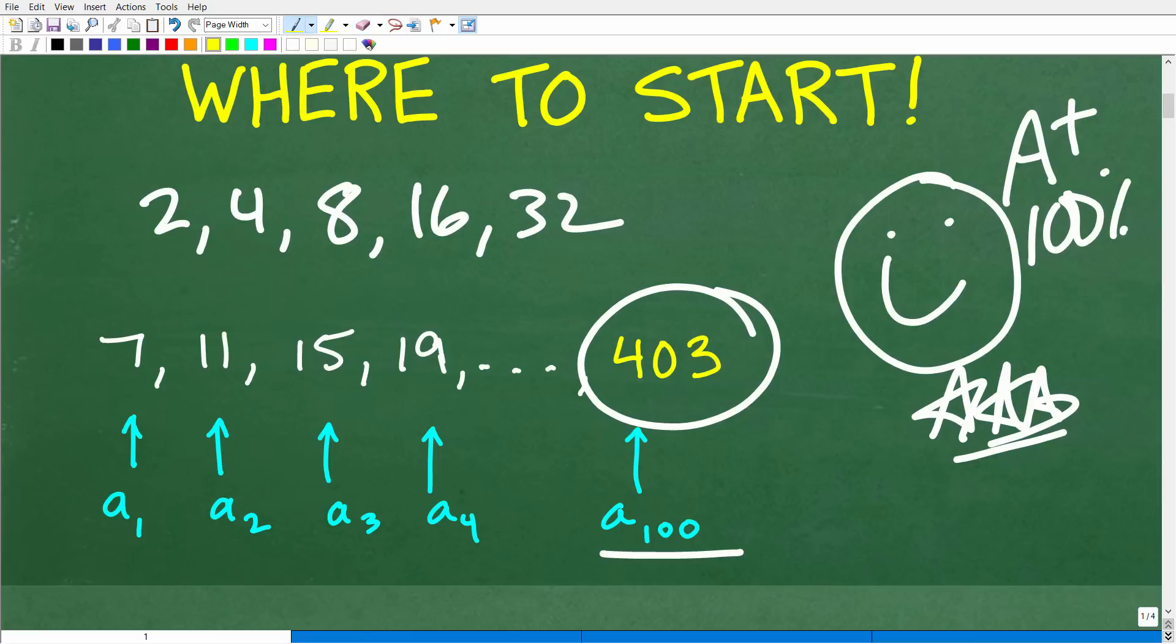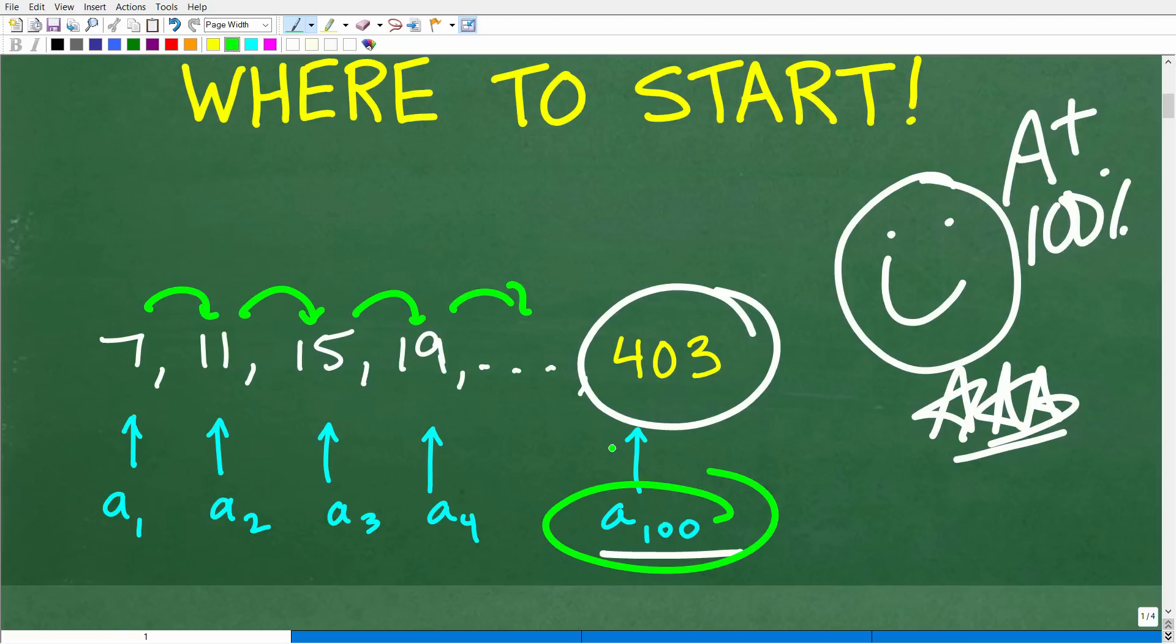This type of sequence is called a geometric sequence. So you have geometric sequence, arithmetic sequence, and these are very, very common types of sequences and series that you definitely need to understand, again, at this level of math. But even if you didn't know anything about sequences and series, to figure this problem out, again, you could just continue to add 4 all the way until you got to the value of the 100th term, which, again, is 403.